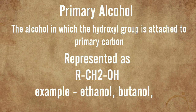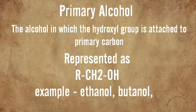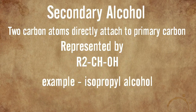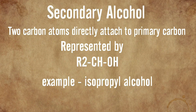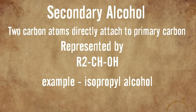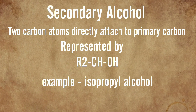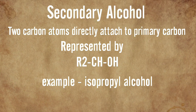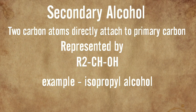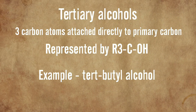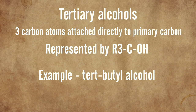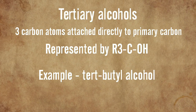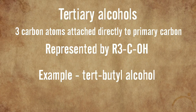The alcohol in which the hydroxyl group is attached to the primary carbon is called the primary alcohol — the most common example is ethanol. In a secondary alcohol, two carbon atoms are directly attached to the primary carbon; the example used here is isopropyl alcohol. In a tertiary alcohol, three carbon atoms attach directly to the primary carbon.